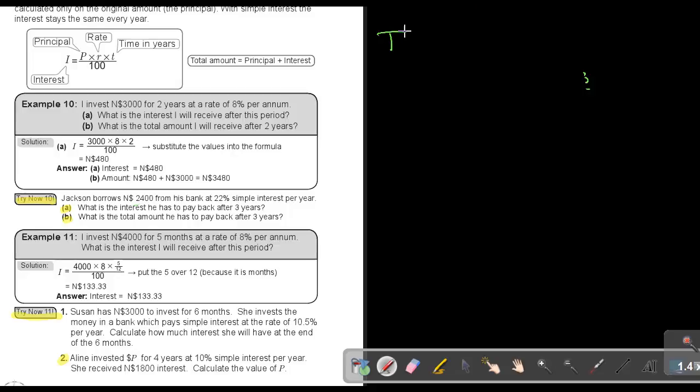Let's start. It's Try Now 11, and I'm going to do number 2. Aline invests a principal for 4 years at 10% simple interest per year. Very important, that simple interest that you highlight. It's not compound, it's simple. She received $1,800 interest. Calculate the value of P.